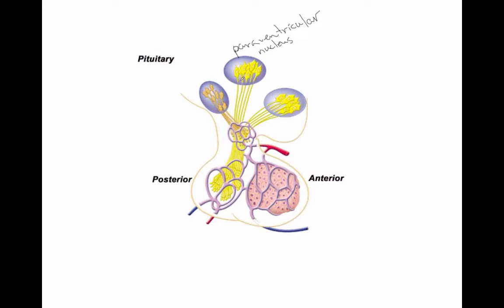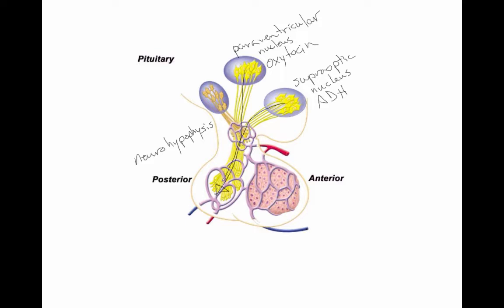The paraventricular nucleus feeds its specific hormone, oxytocin, into the posterior pituitary gland. Because of this intense neural feed, we also call the posterior pituitary gland the neurohypophysis. We also have the supraoptic nucleus, meaning it's above the optic nerve, and it releases antidiuretic hormone. Both are part of the nervous feed that goes into this neurohypophysis.